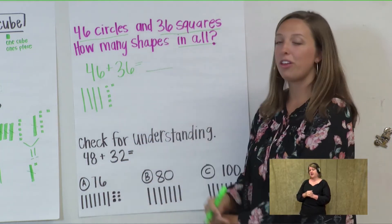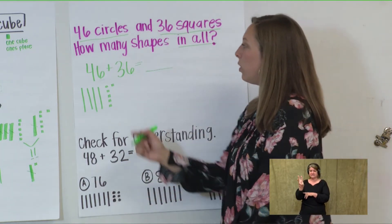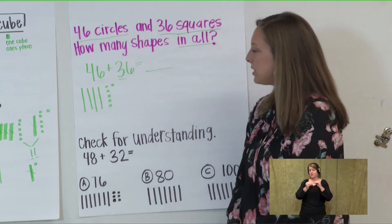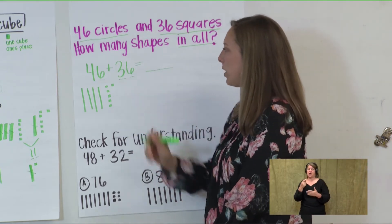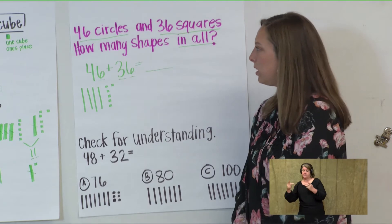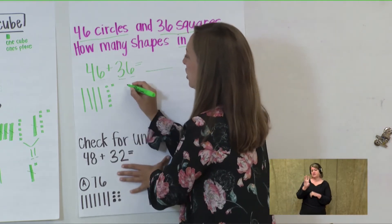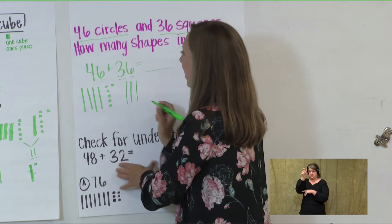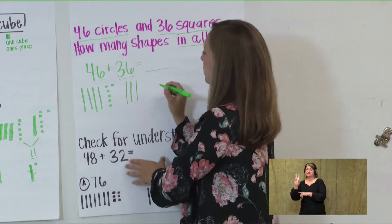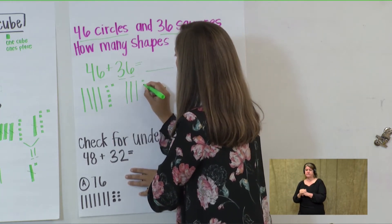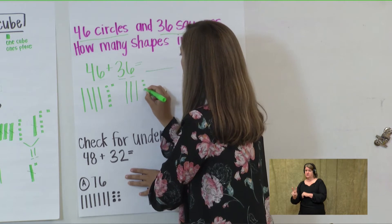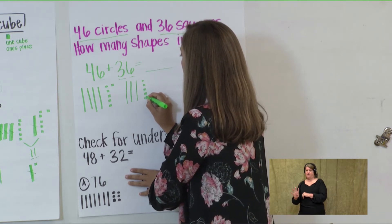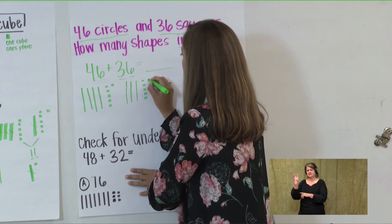And for the number 36, remember what number is in the tens place and what number is in the ones place. For 36 you should have three rods and six cubes: 1, 2, 3, 4, 5, 6.